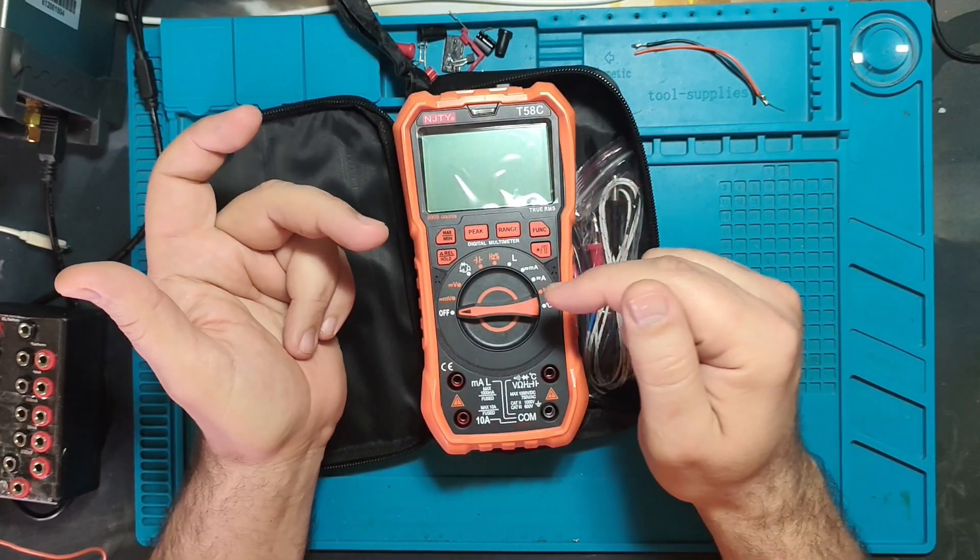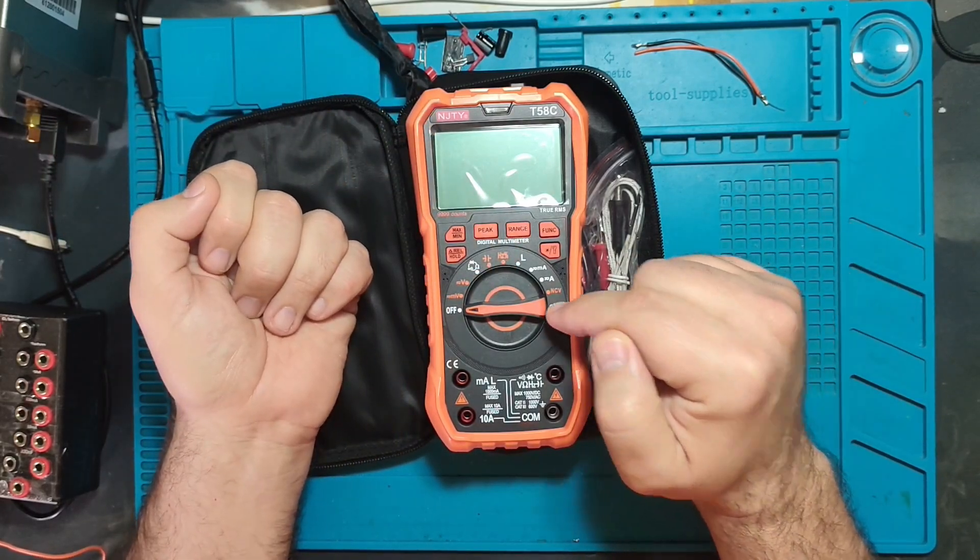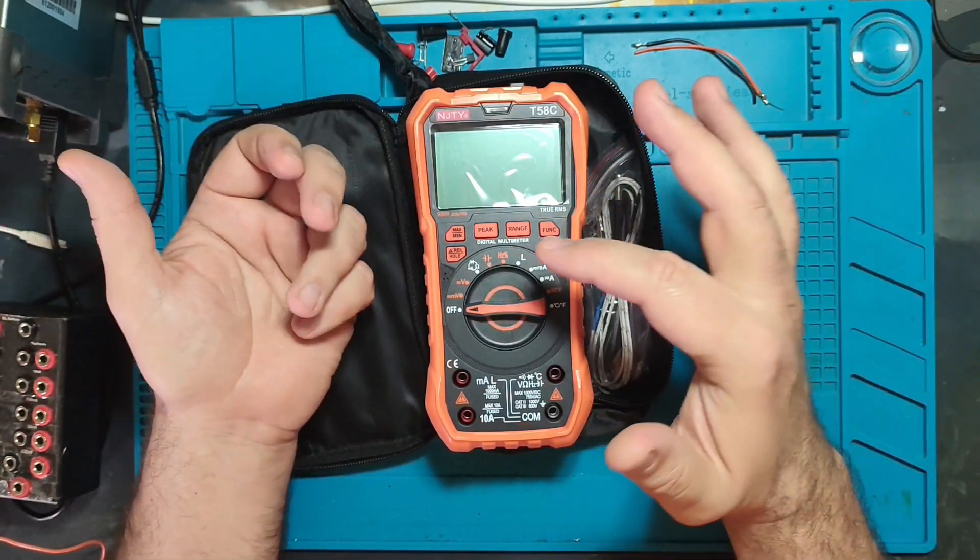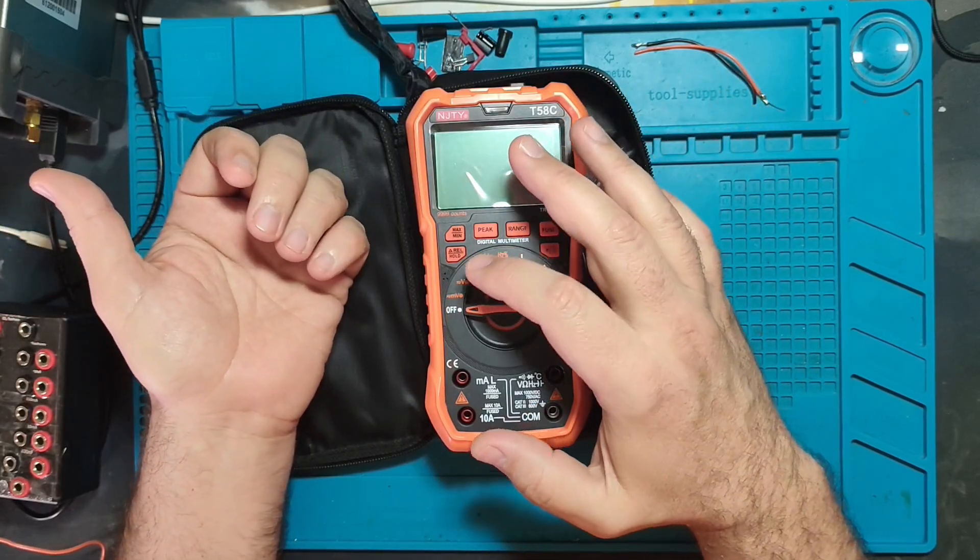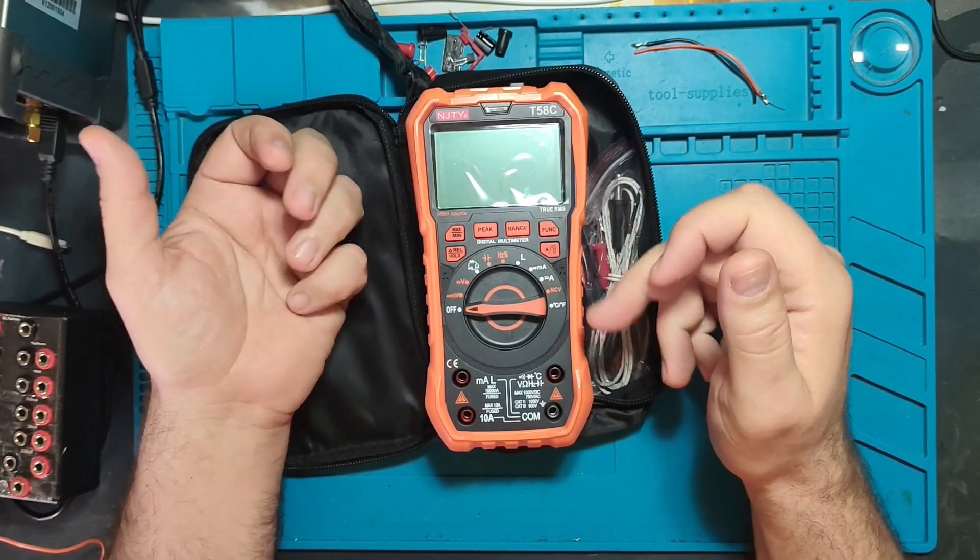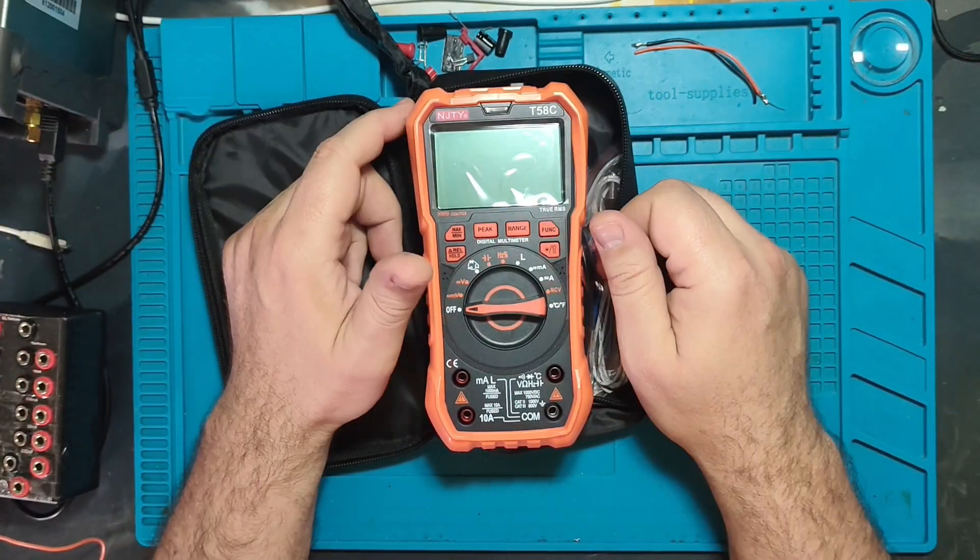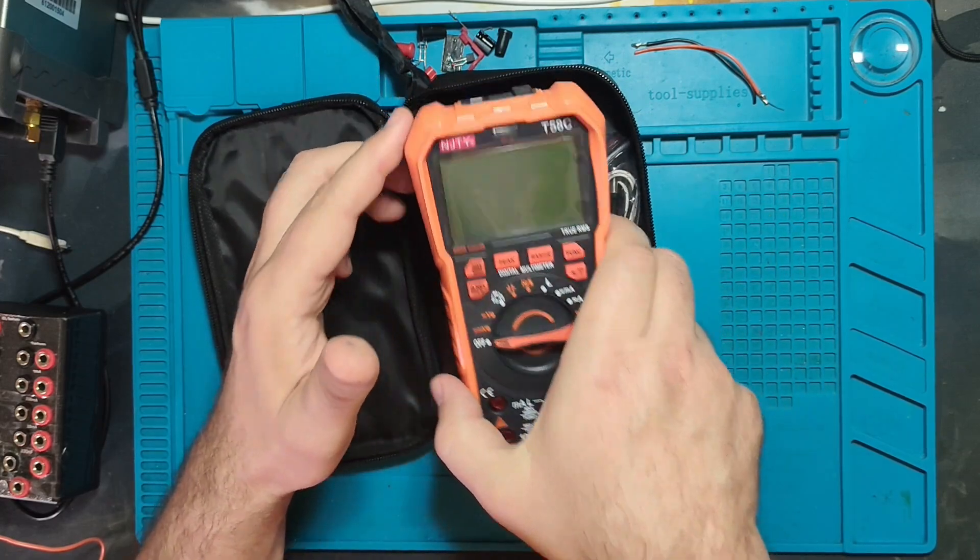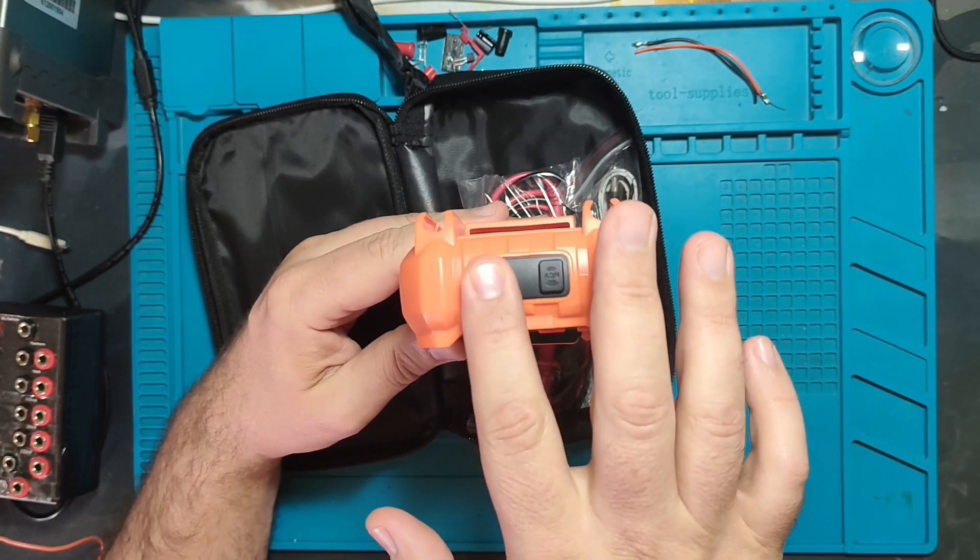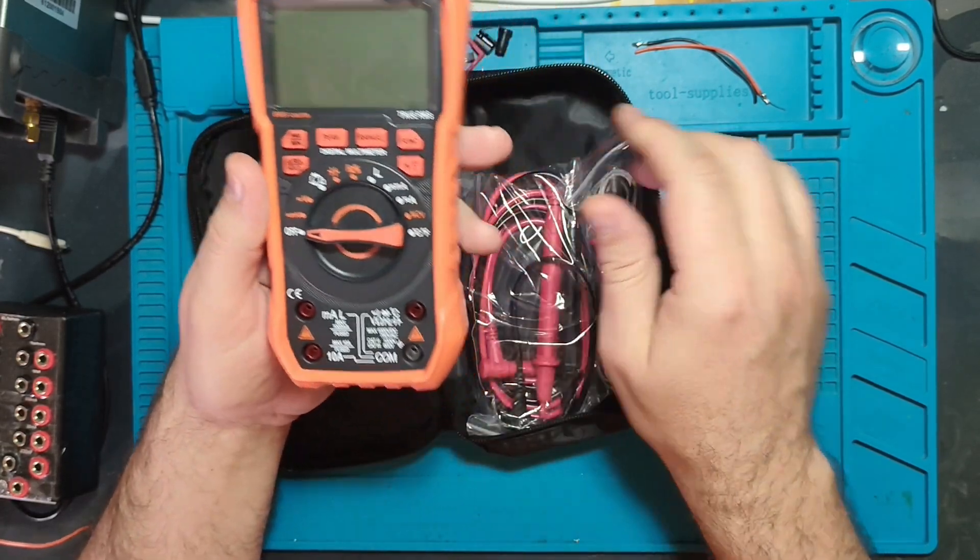Even it can measure inductivity, capacity, frequency, duty cycle, temperature, beside all usual measurements like ohm meter, diode, continuity, volts, millivolts, DC AC current, milliamperes, amperes DC AC, and even non-contact voltage detection. Look at this, here is not usual that you see where it's placed. It's a feature as well, little LED light which can be handy.